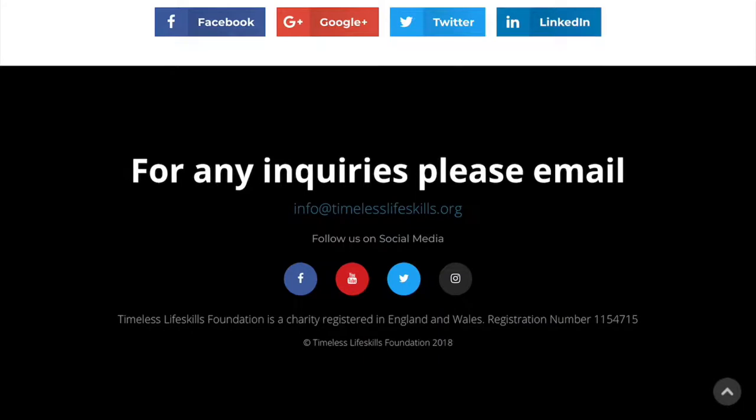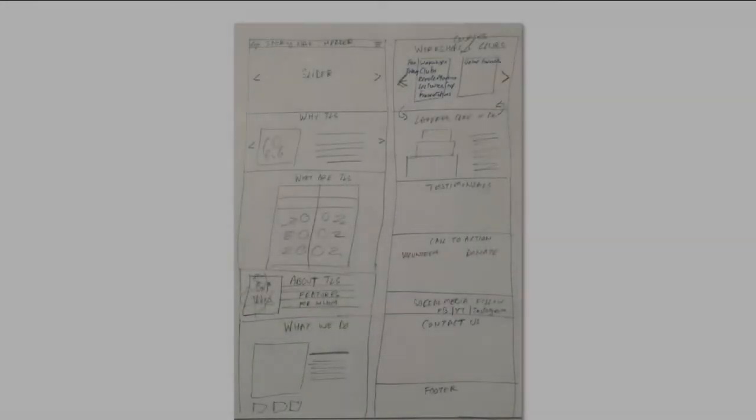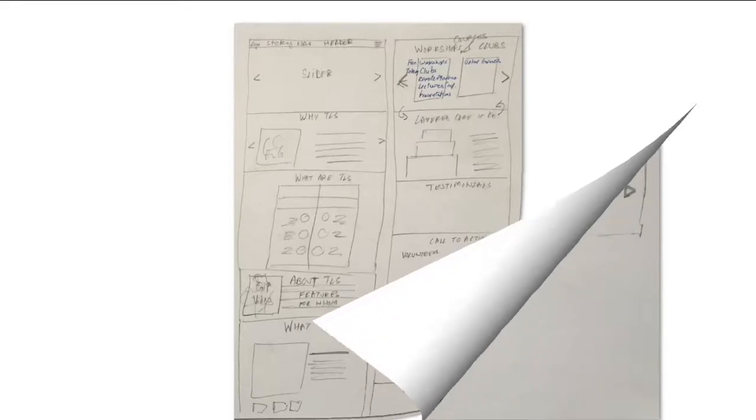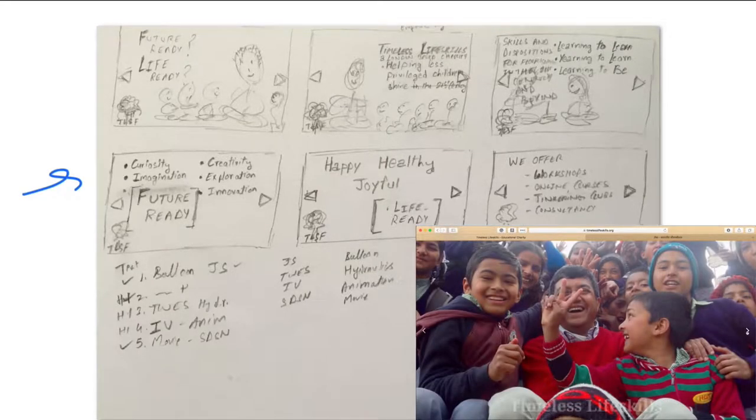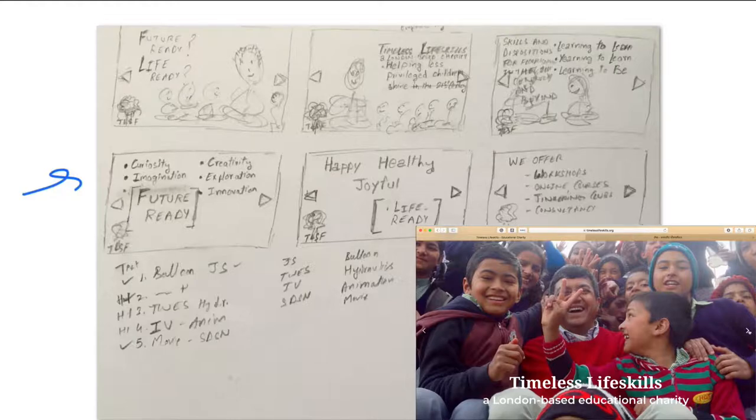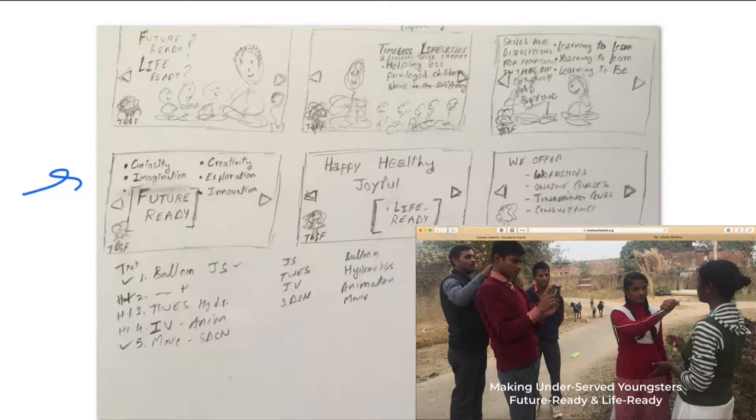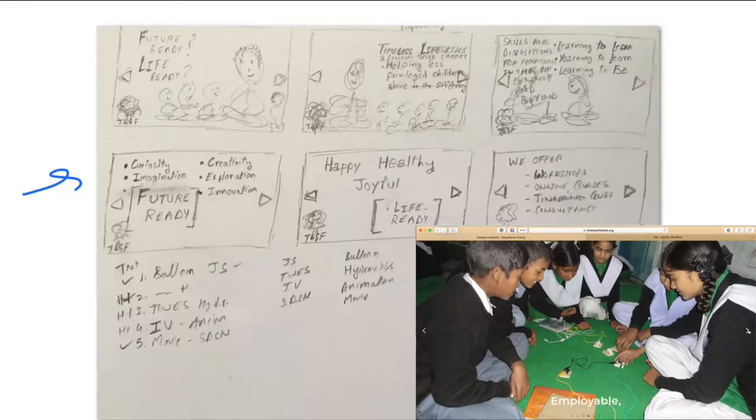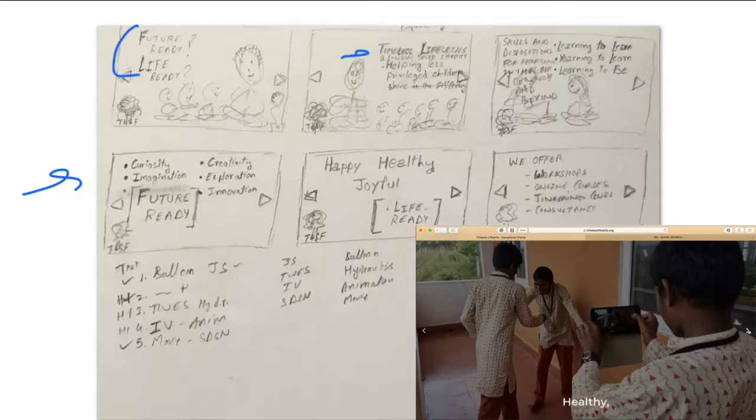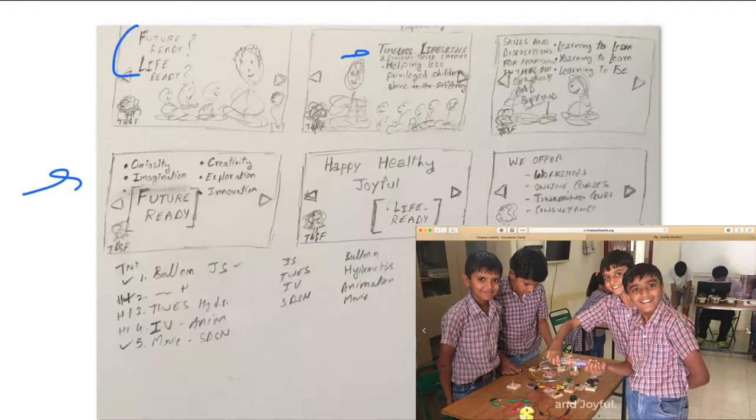Let me show you a couple more examples of storyboarding. So I like to storyboard, and I had storyboarded some of the elements of the website that I just showed you. For example, this is the storyboard of the top sliders on the website. So the idea here was that in four or five big photographs with a little bit of text, what I wanted to explain to the audience was how Timeless Life Skills is all about making the underserved children and youth future ready and life ready.